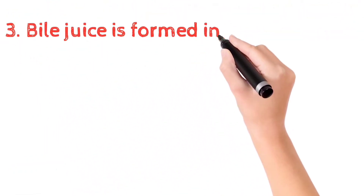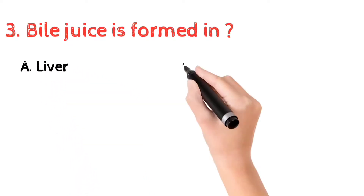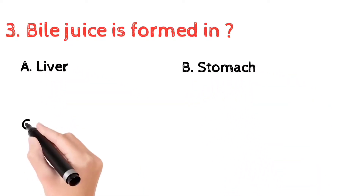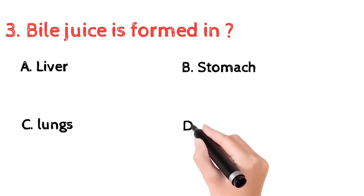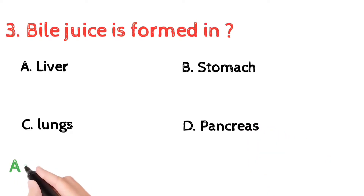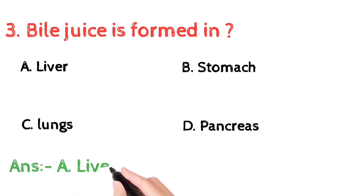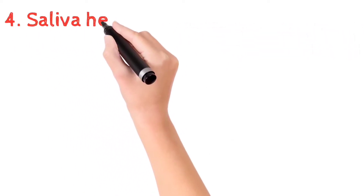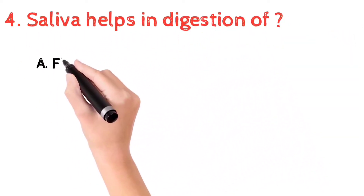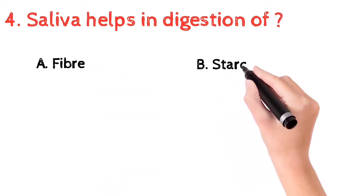Question number 3: bile juice is formed in — a) liver, b) stomach, c) lungs, d) pancreas. The correct answer is a) liver. Bile is a fluid that is made and released by the liver and stored in the gallbladder.